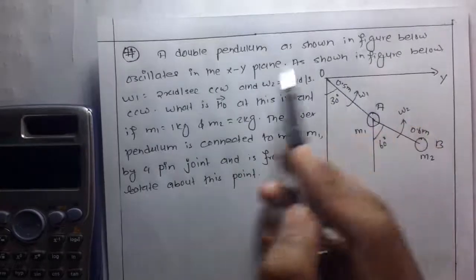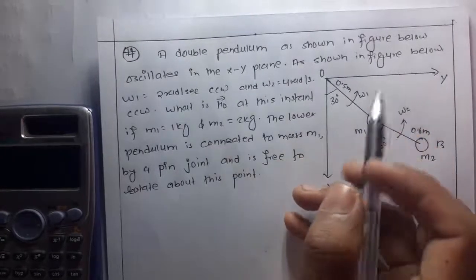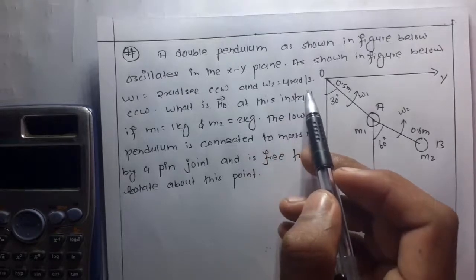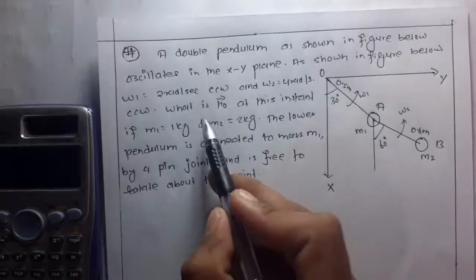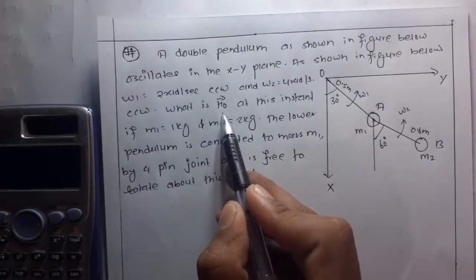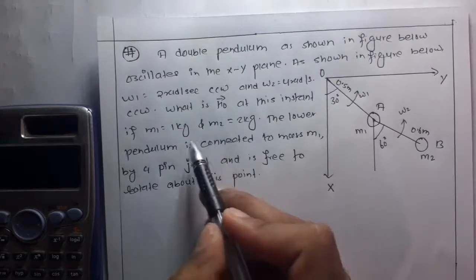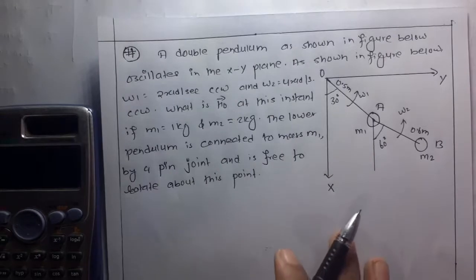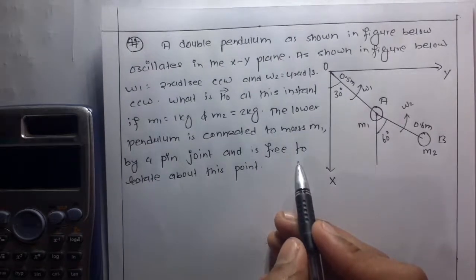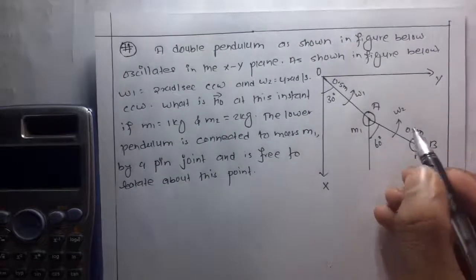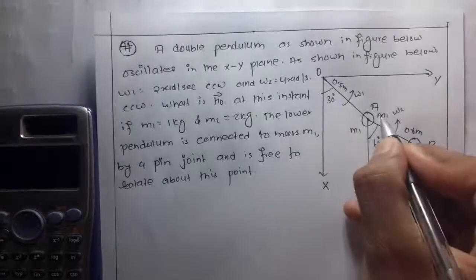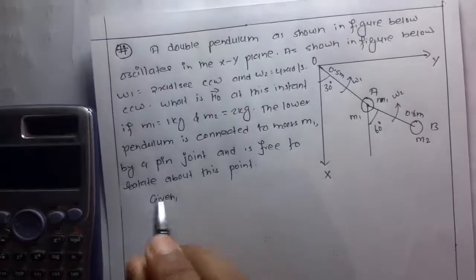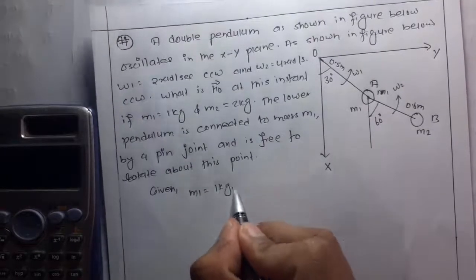A double pendulum oscillates in the xy plane as shown in the figure below. omega 1 is equal to 2 rad per second counterclockwise and omega 2 is equal to 4 rad per second counterclockwise. We need to find H₀, the angular momentum at this instant. m1 is equal to 1 kg and m2 is equal to 2 kg. The lower pendulum is connected to mass m1 by a pin joint and is free to rotate about this point. This is the x direction and this is the y direction.